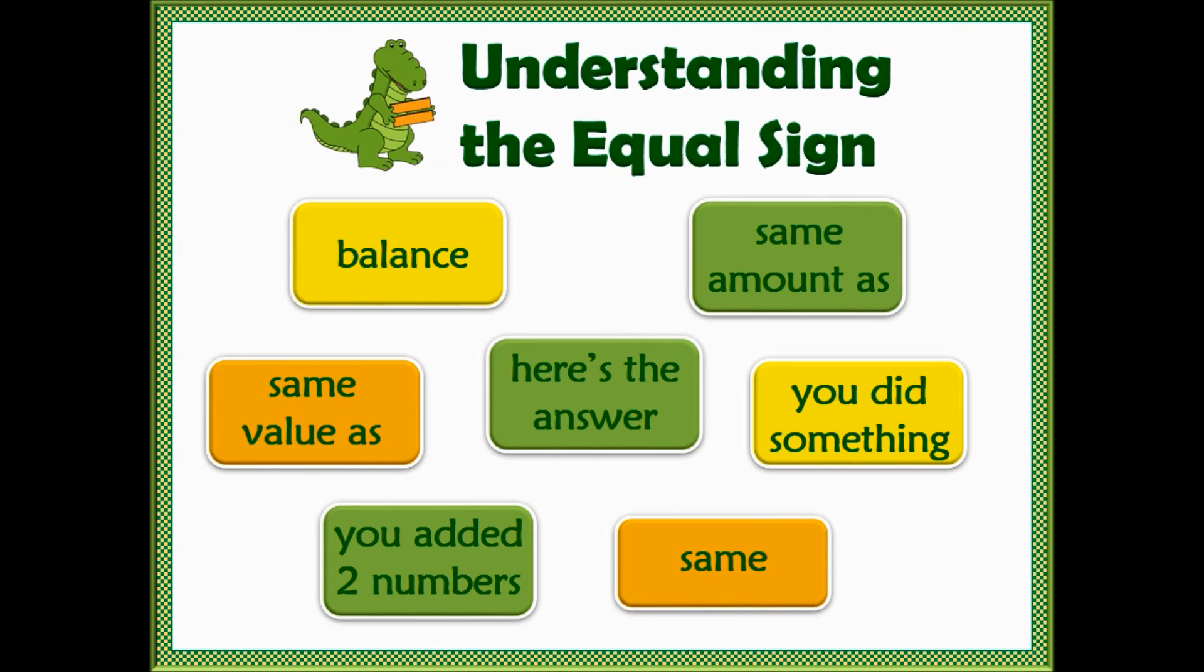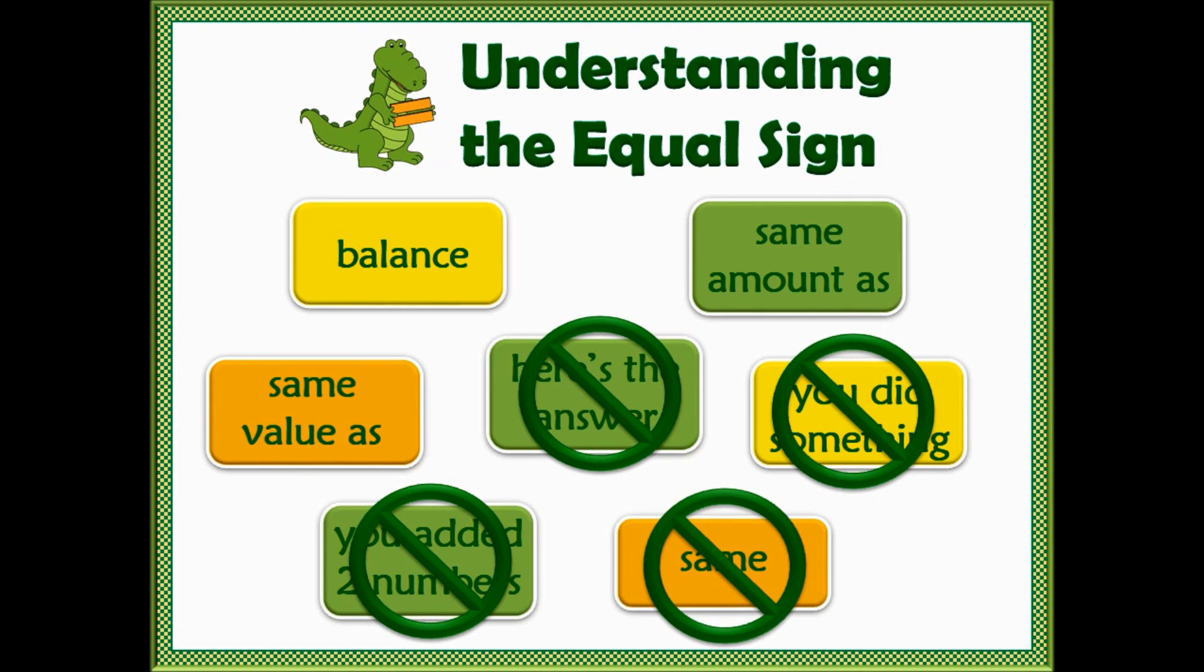Now, let's remove any incorrect answers from this group. Many teachers are surprised to see that same is not an acceptable answer. However, in the equation 4 plus 2 is equal to 6, 4 plus 2 is not the same as 6, it's just the same amount as or the same value as 6.